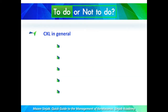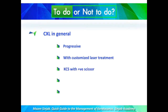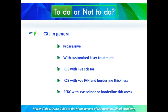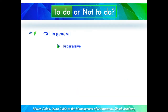Corneal cross-linking in general is used in cases of progressive ectatic corneal diseases, when there is an indication to do customized laser treatment, in cases with keratoconus suspect with positive scissoring reflex, keratoconus suspect with positive family history and borderline thickness, and when there is formfrost keratoconus with positive scissoring reflex or borderline thickness. Starting with the first indication: progression.